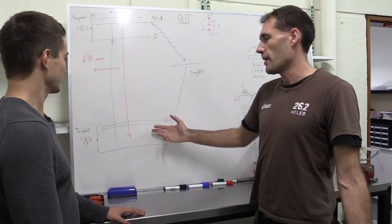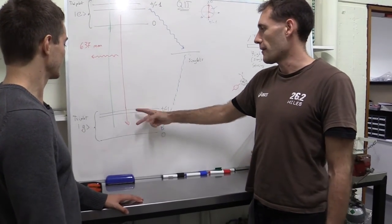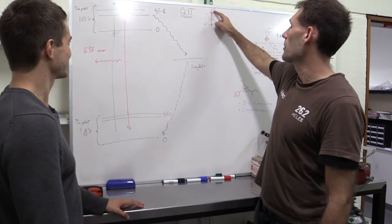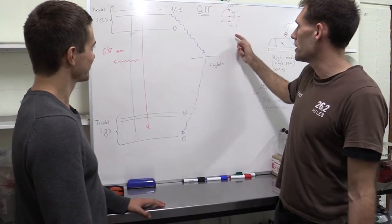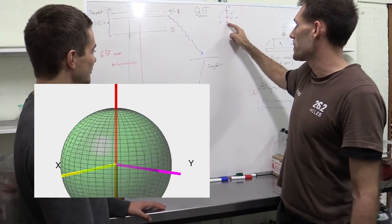Now here you can, just by applying a microwave field, you can flip between zero and one. Again in the Bloch sphere, you can just flip the spin here.